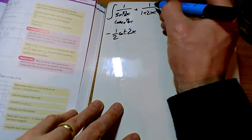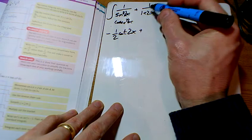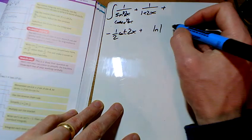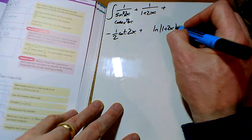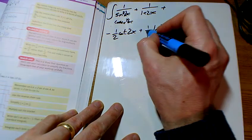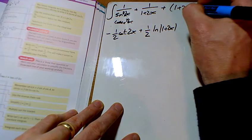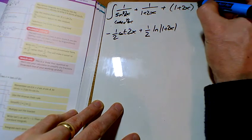This next bit here is just a power on the bottom of 1, so a power of minus 1 overall. So we've got a ln of the bit on the bottom divided by the number of x's as well, another half there.